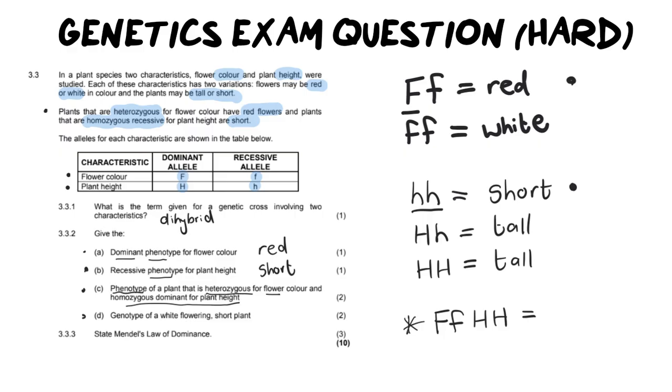If it is heterozygous for the flower color, it means that this flower is going to be red, as we've established earlier. And with two capital Hs, as we've established, it's going to be tall. So red and tall. And that will give you your two marks. And that's why it's out of two.